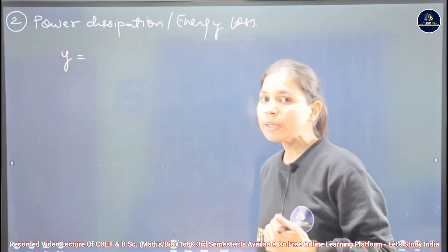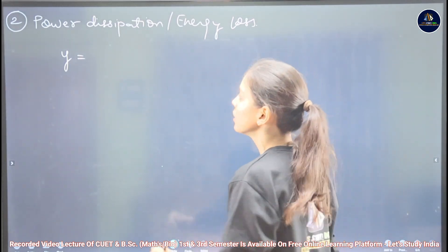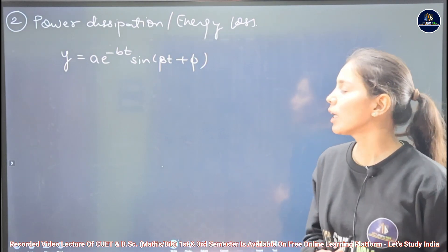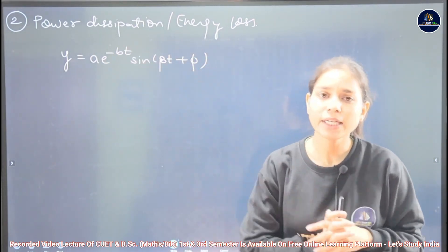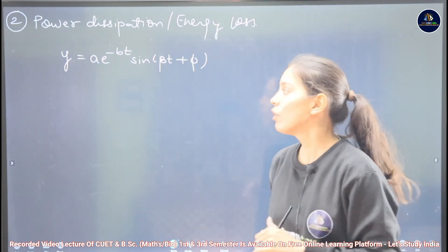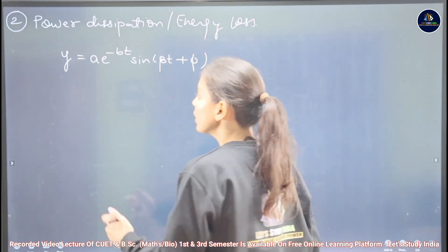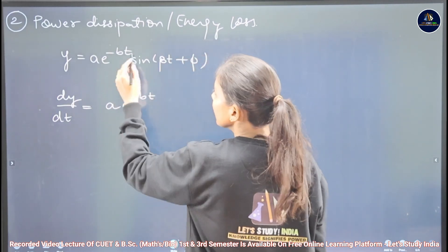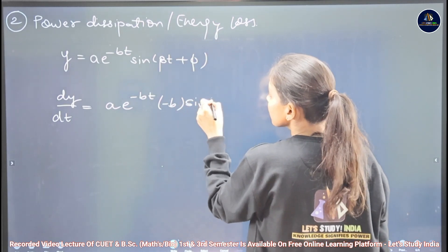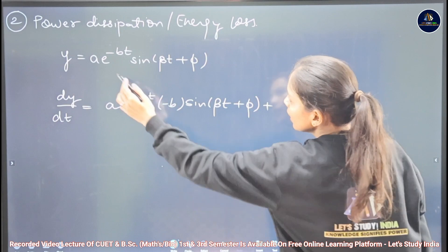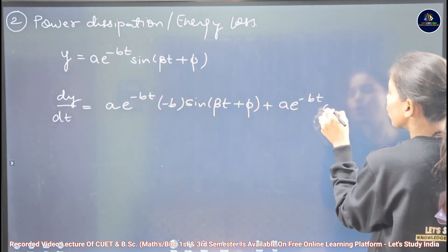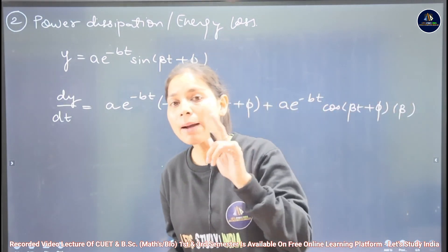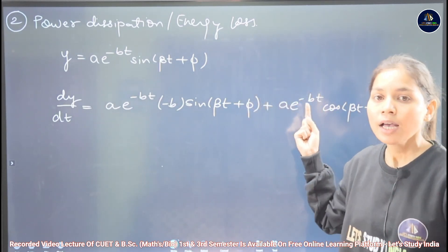In the damping oscillation case, the displacement is y = A·e^(-bt)·sin(βt + φ). To find velocity, we differentiate with respect to time. Differentiating, dy/dt = A·e^(-bt)·(-b)·sin(βt + φ) + A·e^(-bt)·β·cos(βt + φ). Taking Ae^(-bt) as common factor: dy/dt = A·e^(-bt)·[-b·sin(βt + φ) + β·cos(βt + φ)].